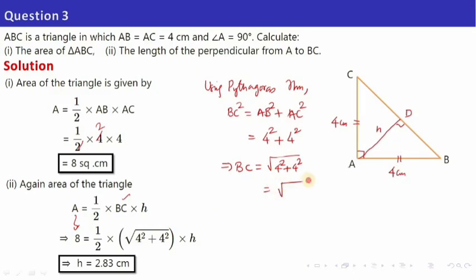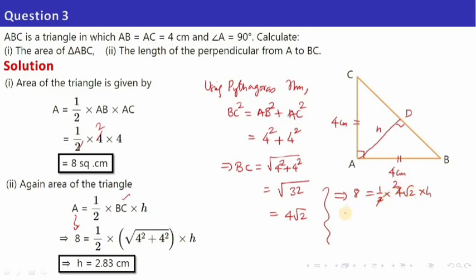From 8 equals half into 4 root 2 into h, the 2 and the half cancel, giving 8 equals 2 root 2 into h. So h equals 8 divided by 2 root 2. Converting this to decimal gives 2.83. Since all units are in centimetre, the height AD is 2.83 cm. You may pause the video and note down the solution.